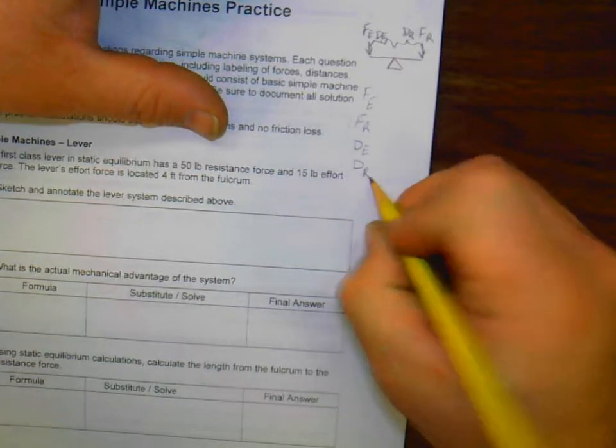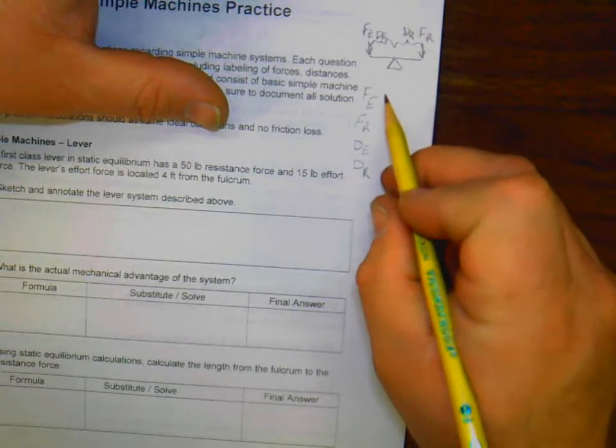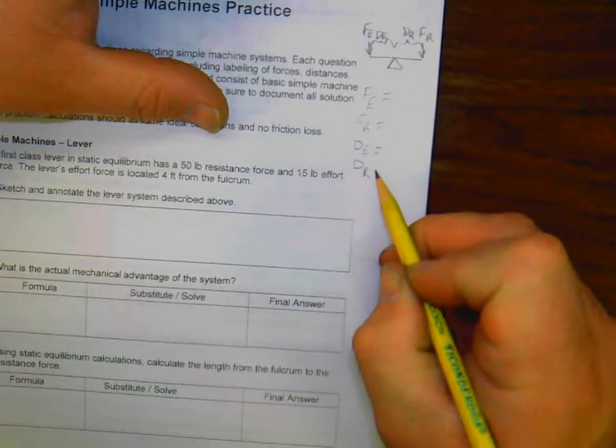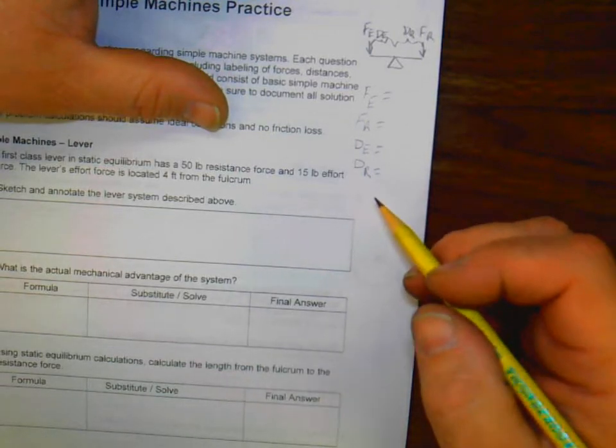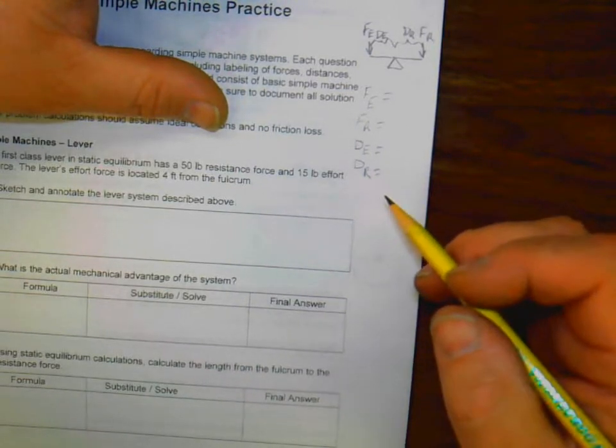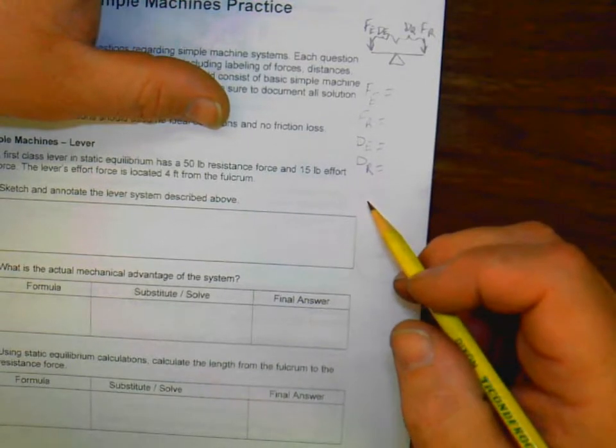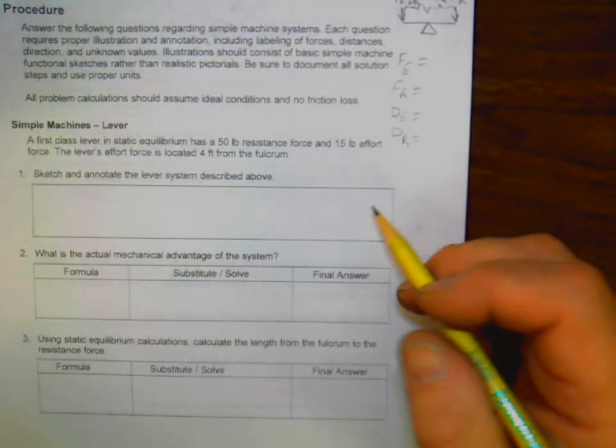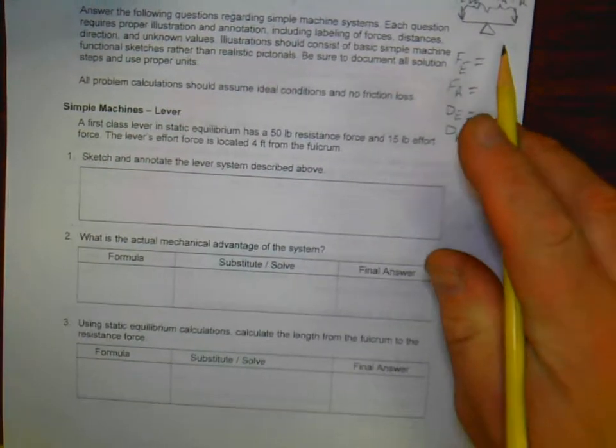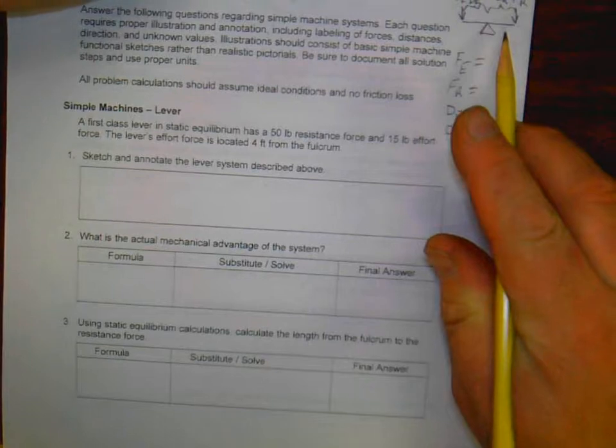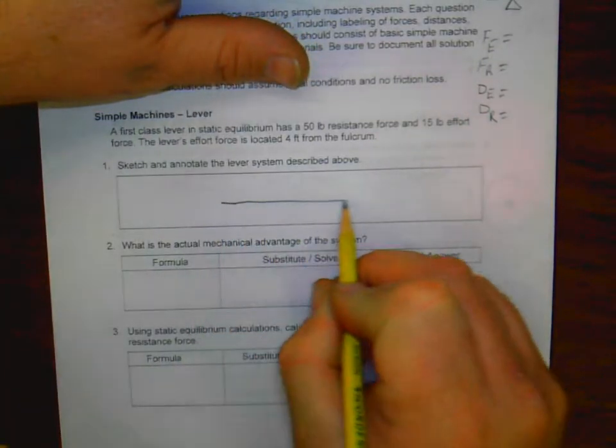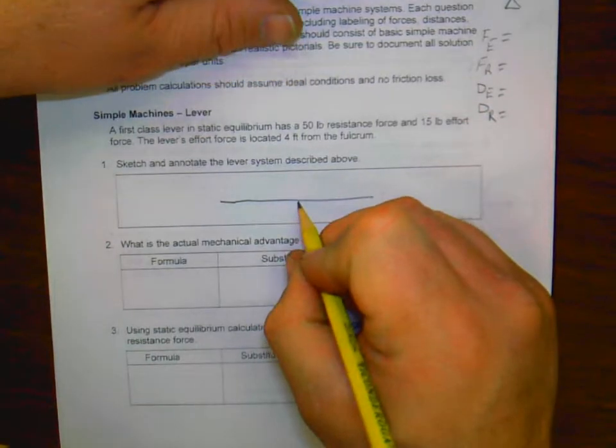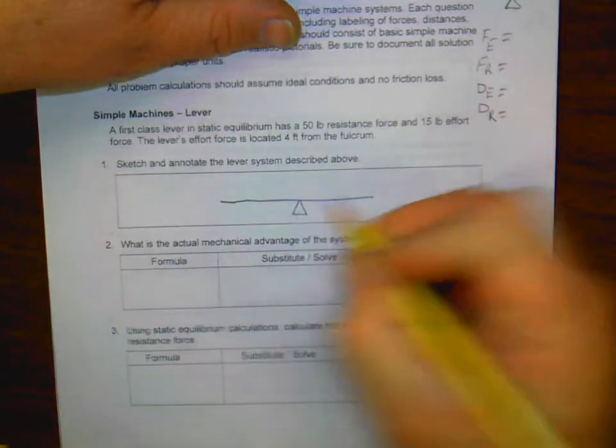Now, in each of these cases, we're probably going to be given three out of the four. Or we're going to be given two out of the four and some other information. So let's go ahead, let's start out with sketching that lever. So I'm going to make my lever, put my fulcrum in here, and I'm going to add my forces.